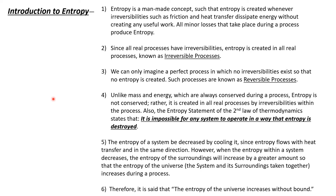The entropy statement of the second law of thermodynamics says: it is impossible for any system to operate in a way that entropy is destroyed. So in real processes, entropy is created. In an imaginary reversible process that has no irreversibilities, there is no entropy created. And if we calculate that the entropy production is negative — in other words, we're destroying entropy — then that is an impossible process.